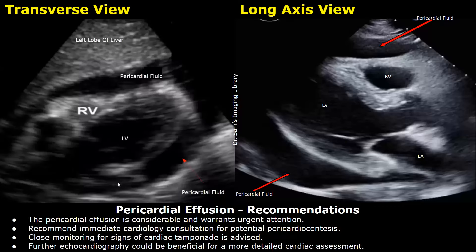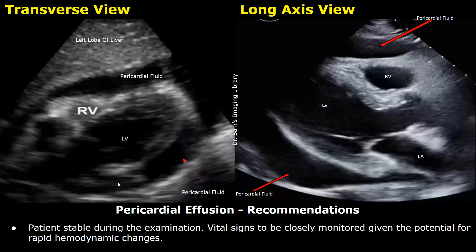You can also add a recommendations section to advise further management and interventions. The pericardial effusion is considerable and warrants urgent attention. Recommend immediate cardiology consultation for potential pericardiocentesis. Close monitoring for signs of cardiac tamponade is advised. Further echocardiography could be beneficial for a more detailed cardiac assessment. Patient is stable during examination; vital signs to be closely monitored given the potential for rapid hemodynamic changes.